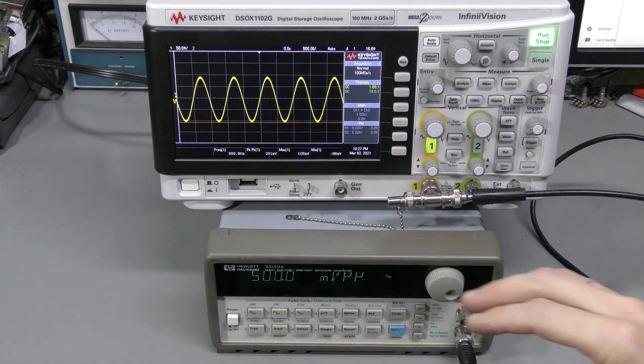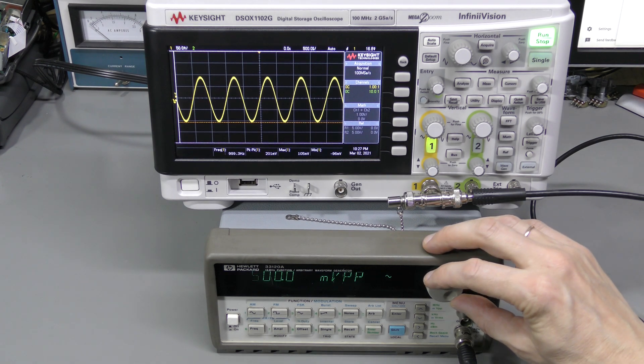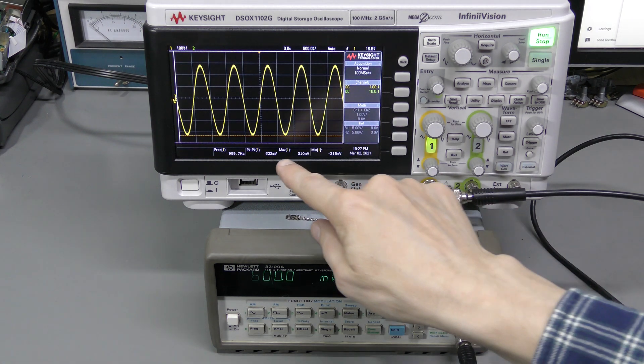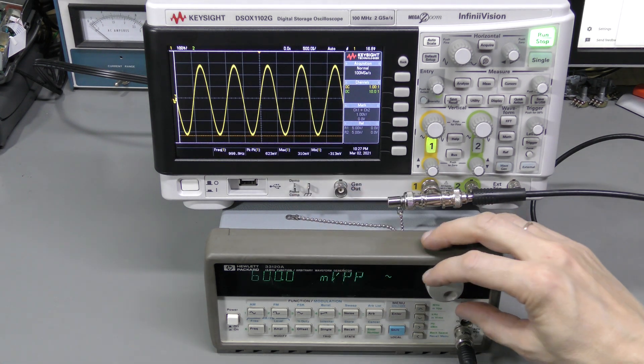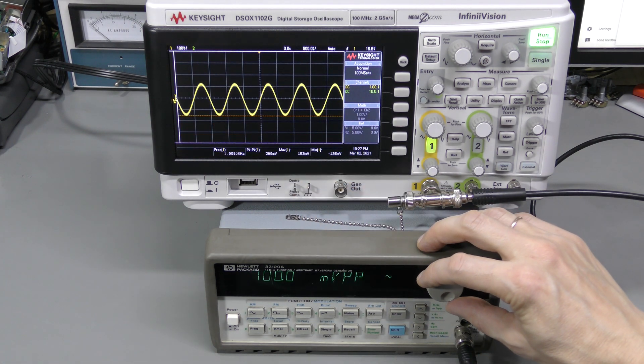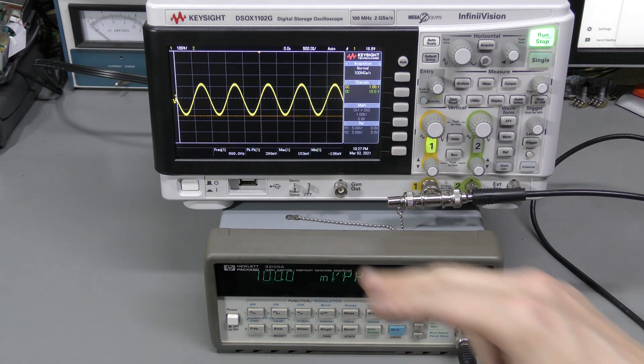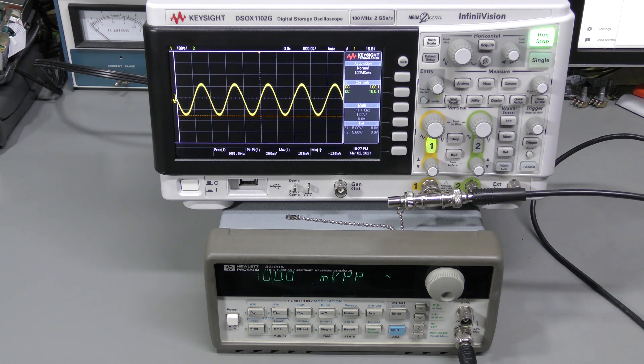500, we have about 200 here on the scope. 600, and we have about 620 on the scope. 700, and it went down again to about 290 or so. Something is really wrong. Let's take this thing apart and take a look inside.